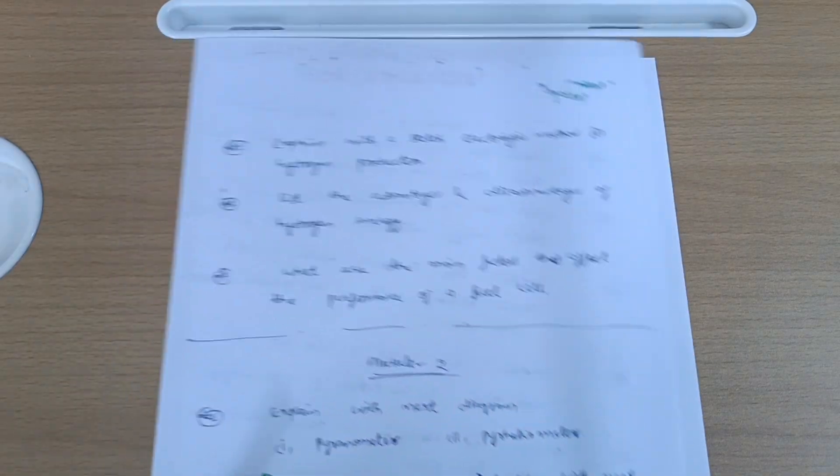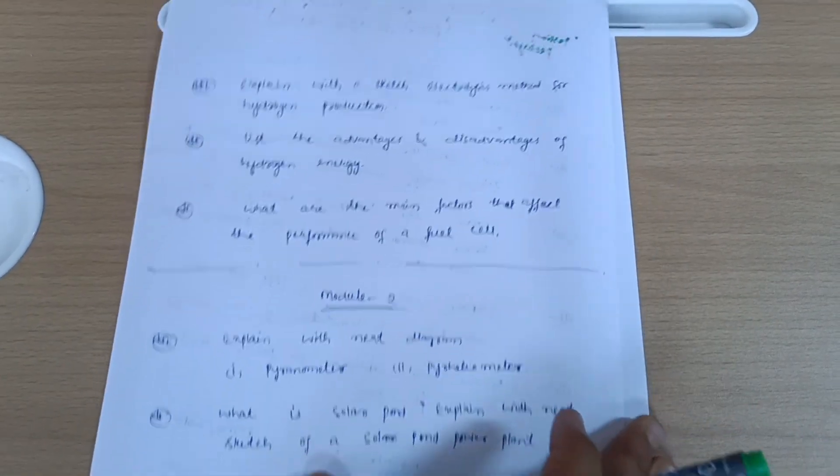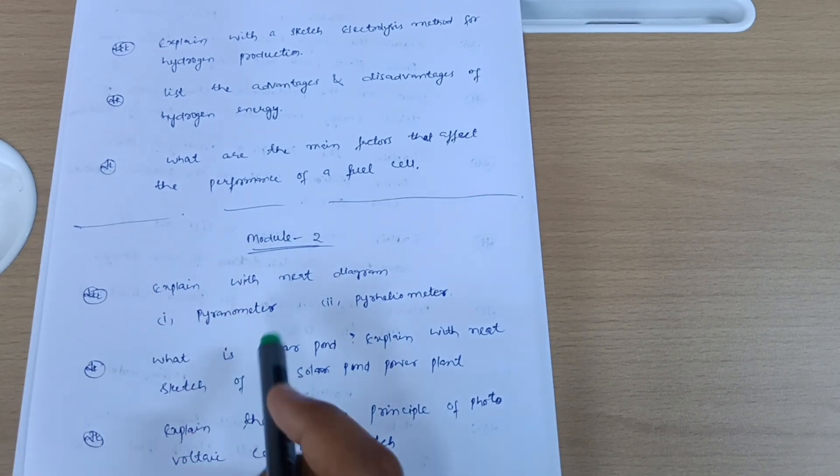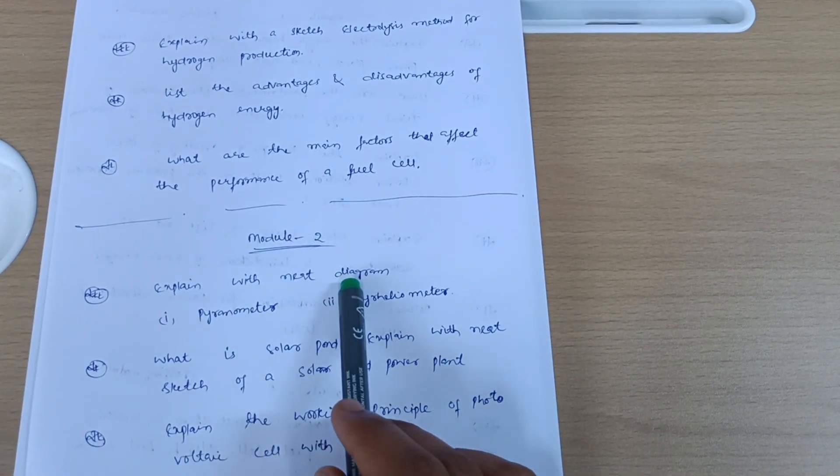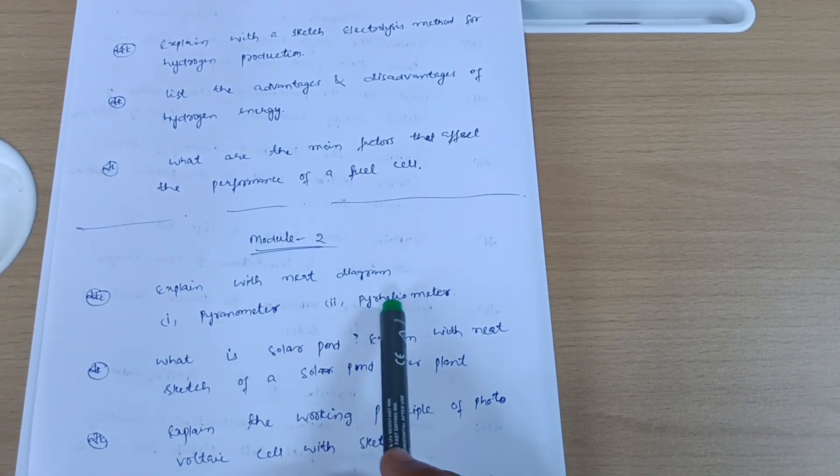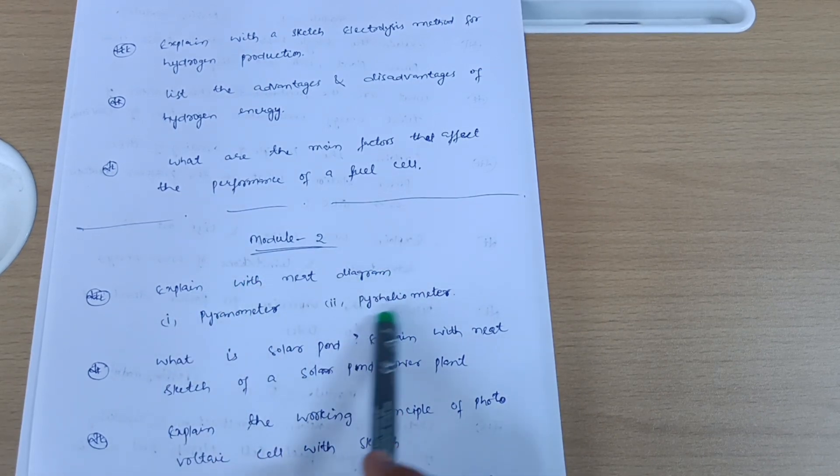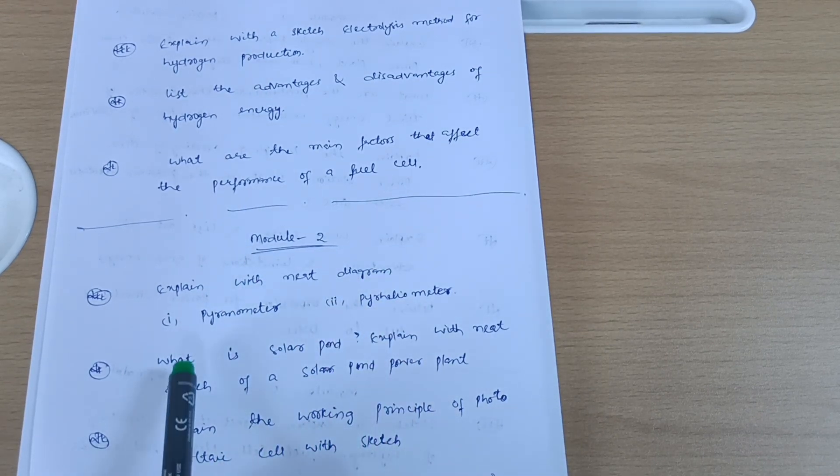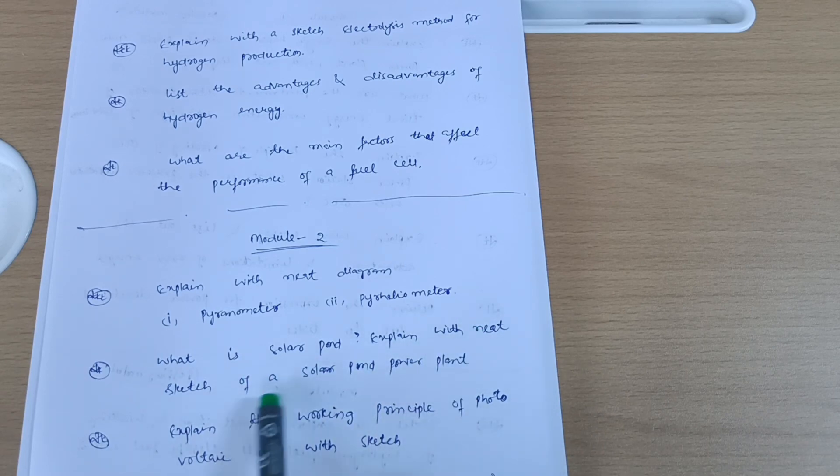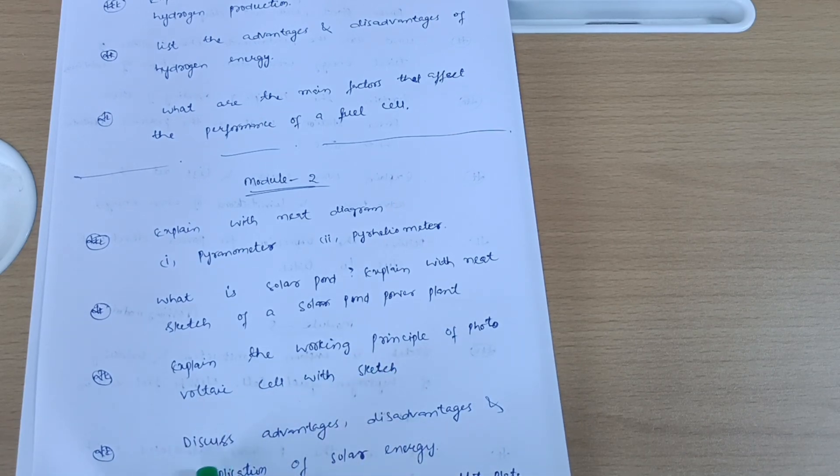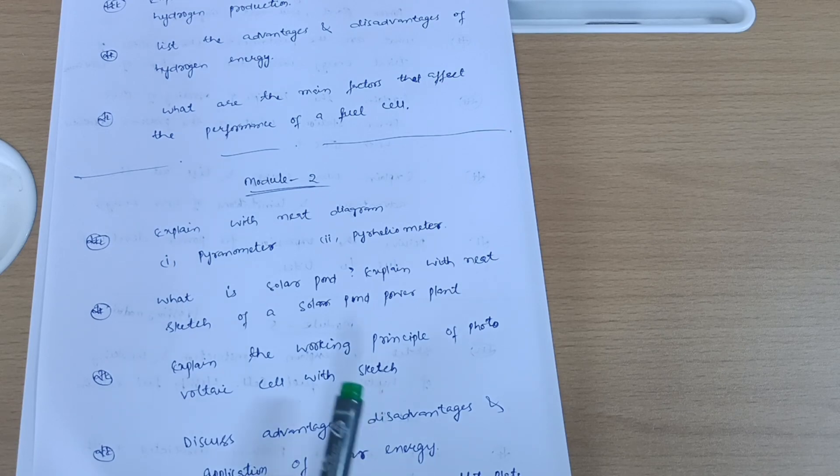Next is Module 2. If you want to score also, you should go through Module 2 and Module 3. Explain with a neat diagram pyranometer and pyrheliometer. These are the measurements for solar radiation. Draw the diagrams and try to write down the theory in your own words. What is a solar pond? Expand with neat sketch of a solar pond power plant. Explain the working principle of photovoltaic cell with sketch and discuss advantages, disadvantages, and applications of solar energy.